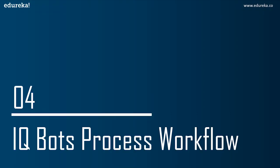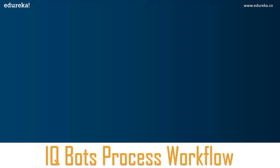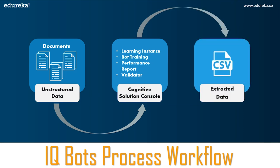Now let's look at the IQ bots process workflow. IQ bots process unstructured or semi-structured data. For example, if you have a set of invoices, those invoices can be of different types with data in different formats. This unstructured data is processed using IQ bots through the cognitive solution console — the IQ bot console — where you create learning instances and train the bot. Once trained, you can generate a performance report and validate the results to check whether data was extracted correctly or incorrectly.